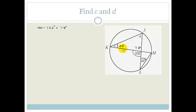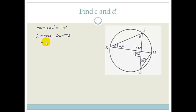Then I can say this plus this plus this have to add up to 180 degrees. Therefore D is going to be 180 minus 24 minus 78. And that becomes 78 degrees as well.